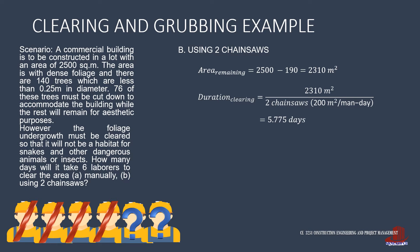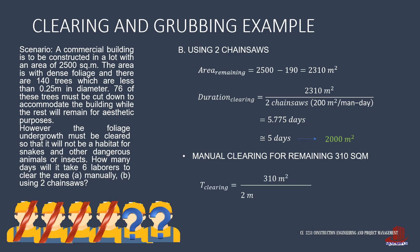If we are to rent tools on a per-day basis, then we just take the rounded days of 5 using the chainsaws, so 5 days of 200 square meters output for each would finish 2,000 square meters. The remaining will have to be done by hand. The remaining 2 laborers will be manually clearing while 4 are using the chainsaws, so that remaining 310 square meters cleared by 2 men at 25 square meters per man per day will take them 6.2 days.